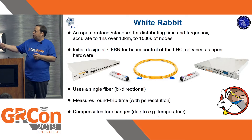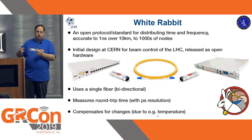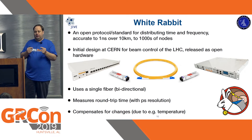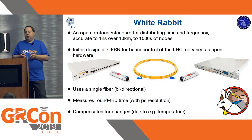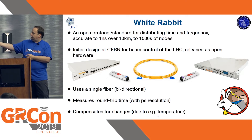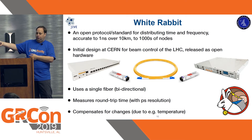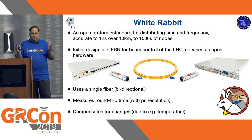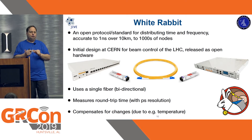Not everyone here is familiar with White Rabbit. You have a White Rabbit switch connected via fiber — not normal fiber optics, because you use the same fiber back and forth at different wavelengths, which is why it has only one fiber connection instead of the normal pair. At the other end an optical converter gives you your pulse-per-second and 10 megahertz output, and it completely compensates for the unknown and changing delay through the fiber by measuring the round trip time to picosecond accuracy.